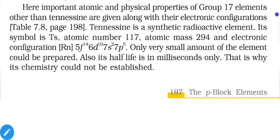Important atomic and physical properties of Group 17 elements, other than tennessine, are given in a table along with electronic configurations. Tennessine is a lab-synthesized element — it does not occur naturally. Just like the previous group, we do not have much data available because it can only be produced for a very short fraction of a second before it radiates energy and decomposes into simpler atoms. Astatine, the second-to-last element, is naturally occurring but radioactive, so we have limited data about it.